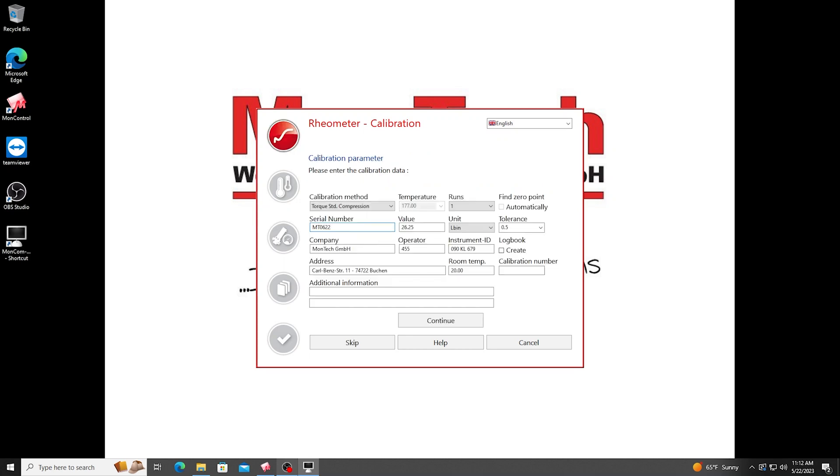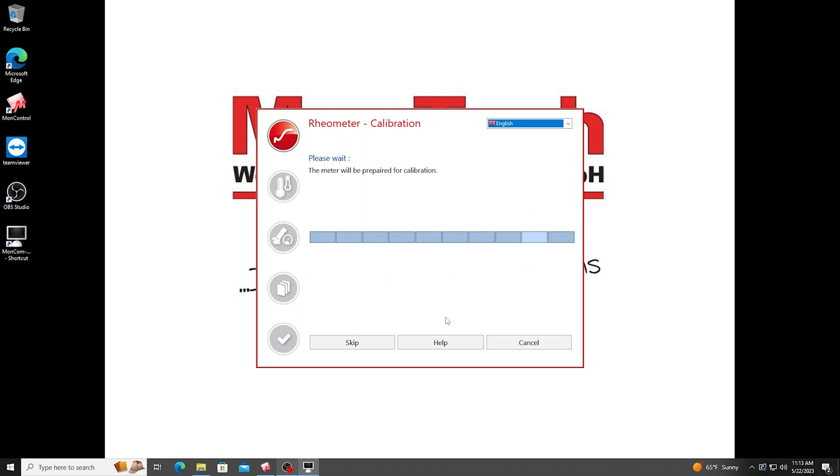The next screen to open is the calibration parameter screen. Enter all relevant traceable information pertaining to the unit and torque calibration standard. Click continue once completed.